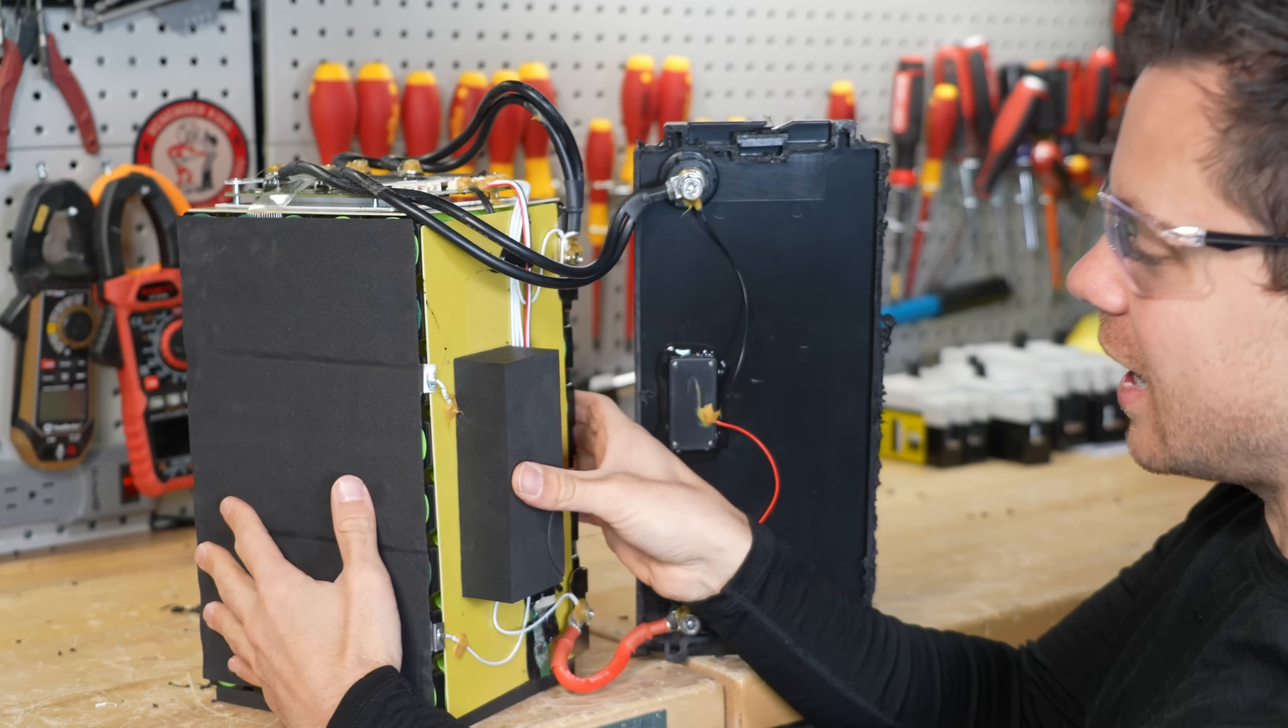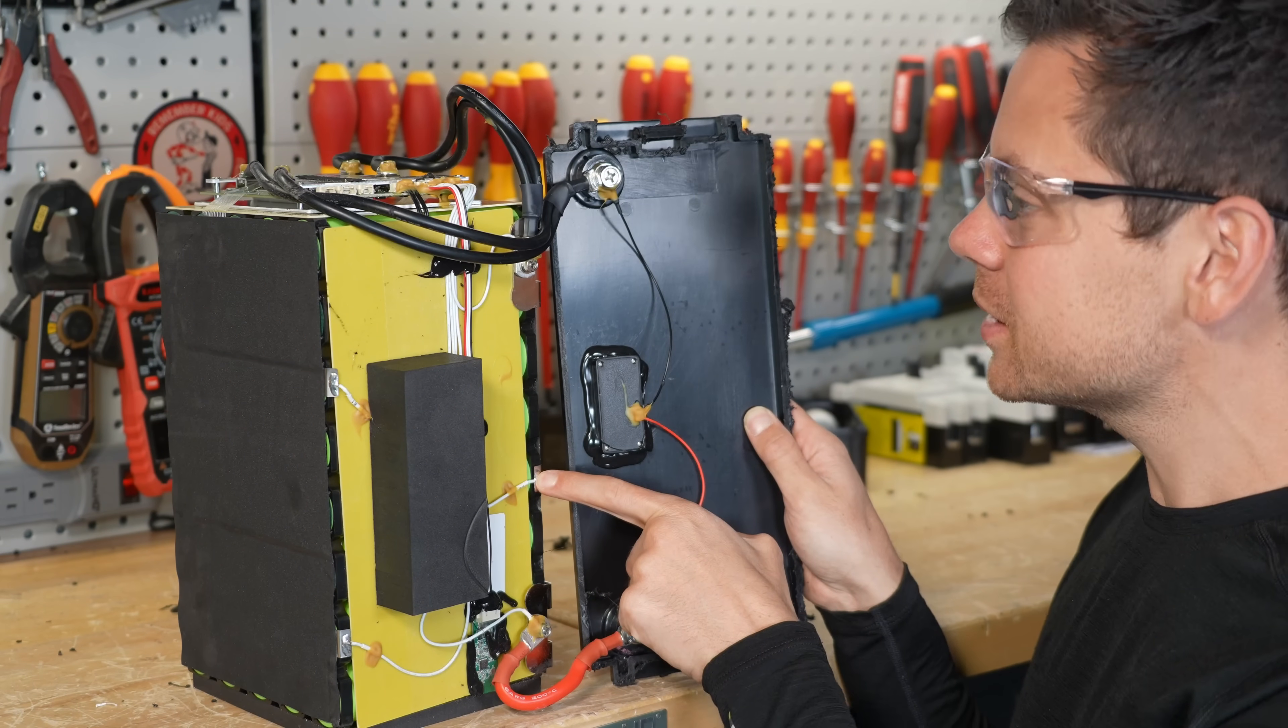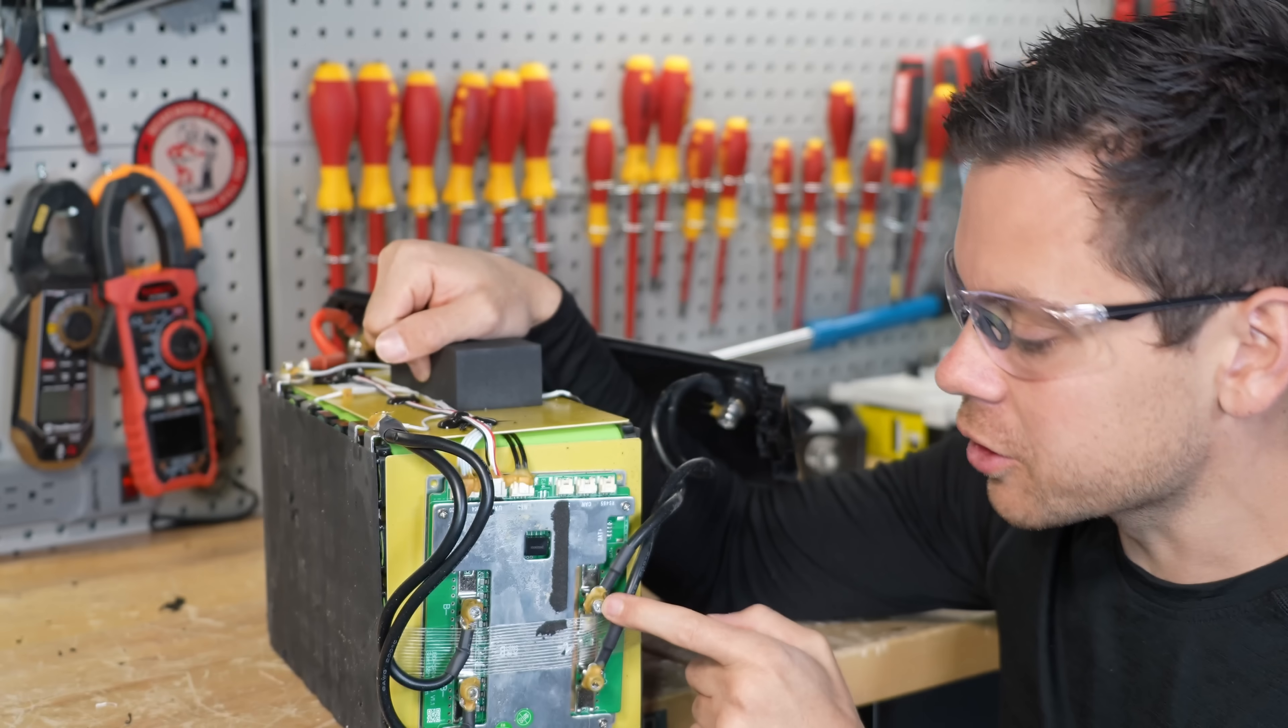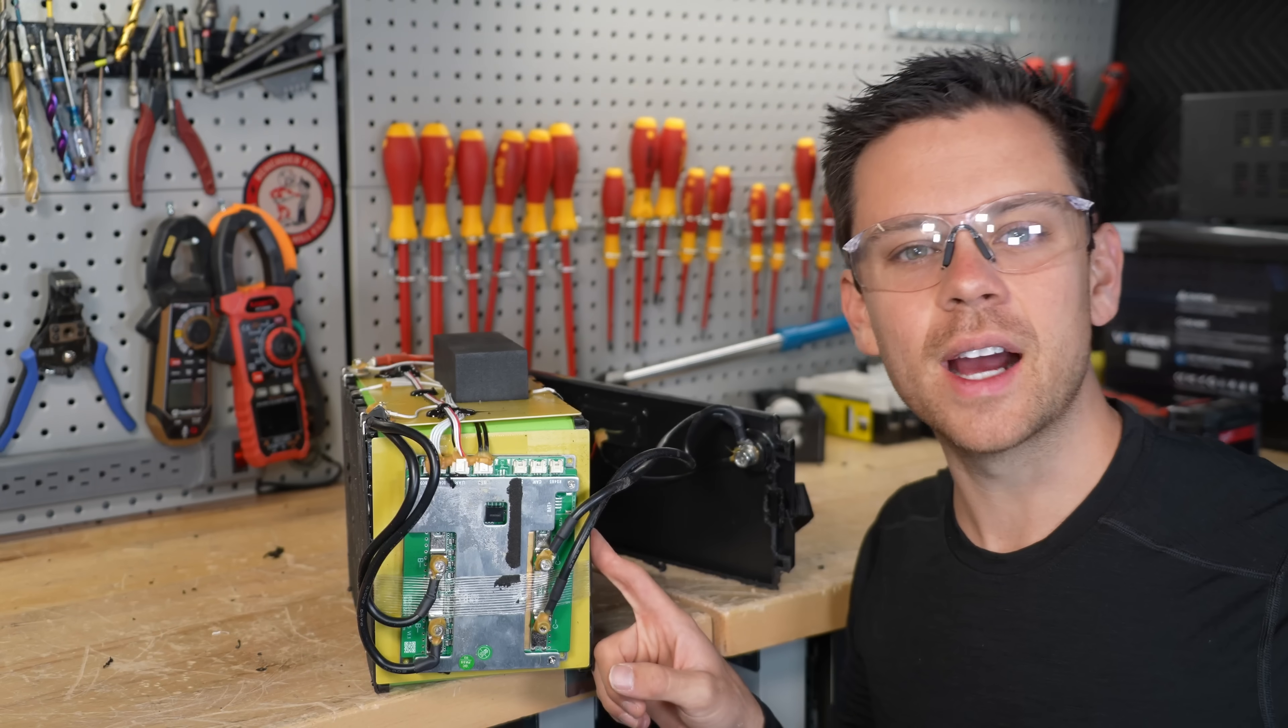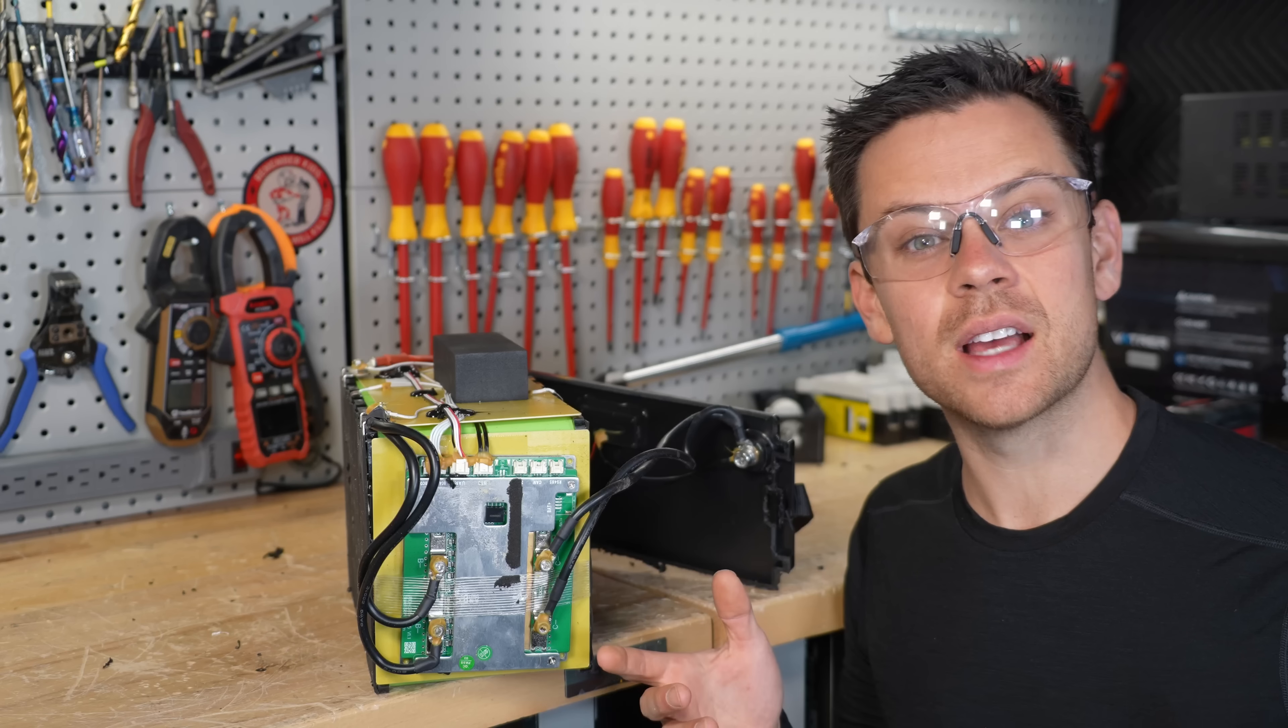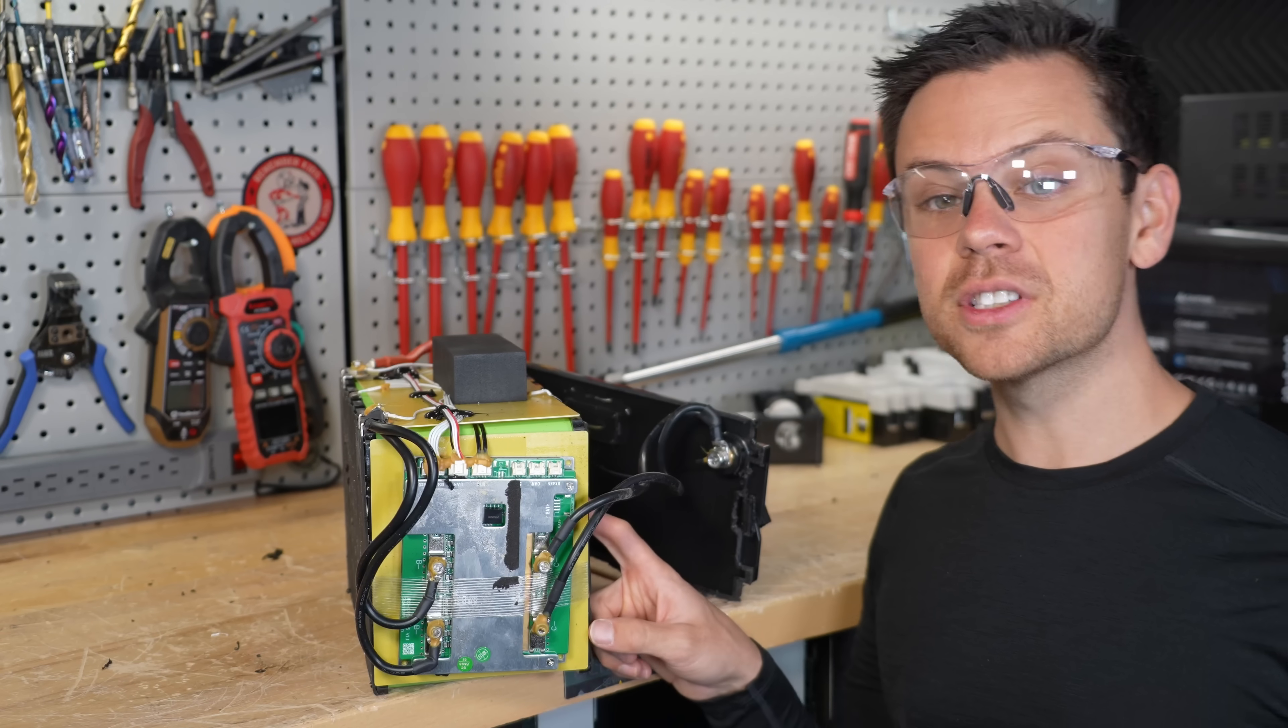Now the build quality is not the best. The balance leads are not protected, they're soldered to these tabs, but the voltage meter is actually sealed. We have screw terminals on the BMS and it has bluetooth. I actually have a fun idea. Let's do another capacity test at a 1C rate and see if it's less than 82 amp hours.